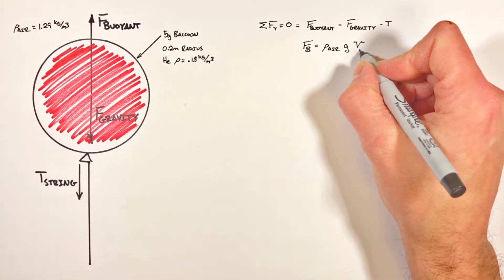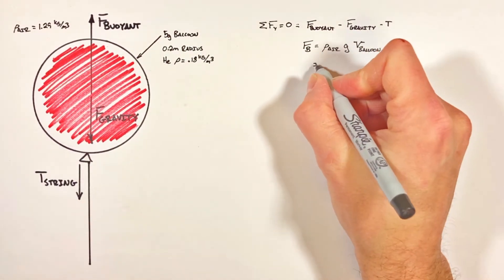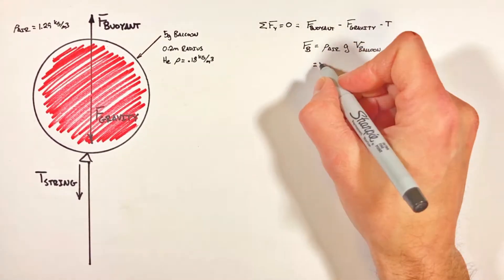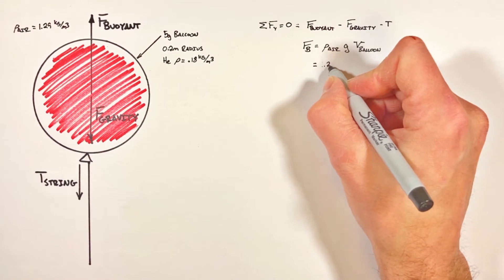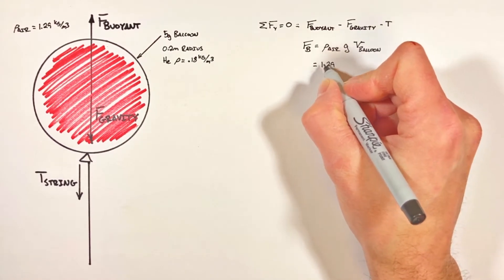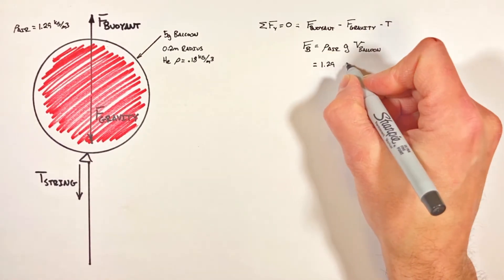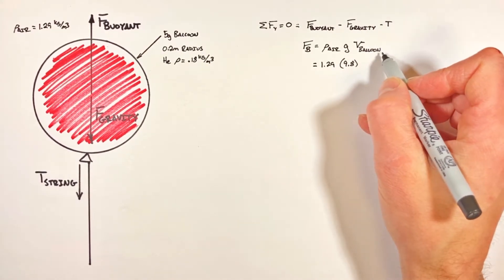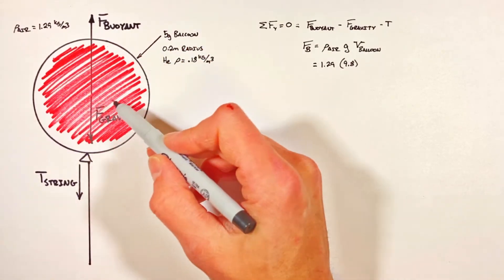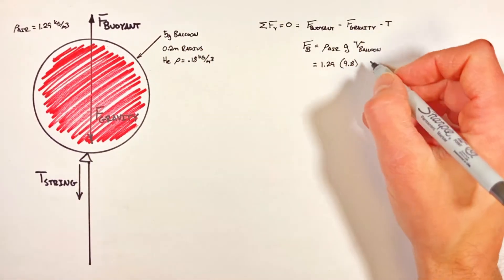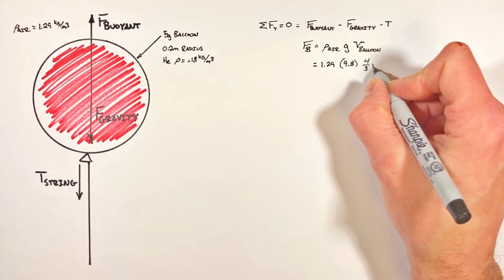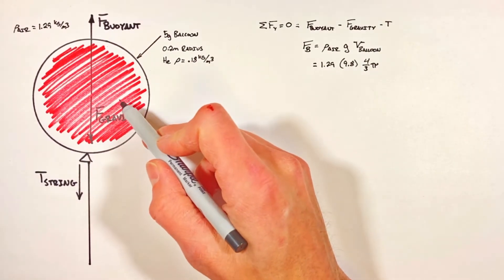Subbing in our values: the density of air at sea level is 1.29 kilograms per cubic meter, the acceleration due to gravity is 9.8, and the volume of the balloon is based on its dimensions. For a spherical balloon, the volume is four-thirds pi times the radius of the balloon, 0.2 cubed.